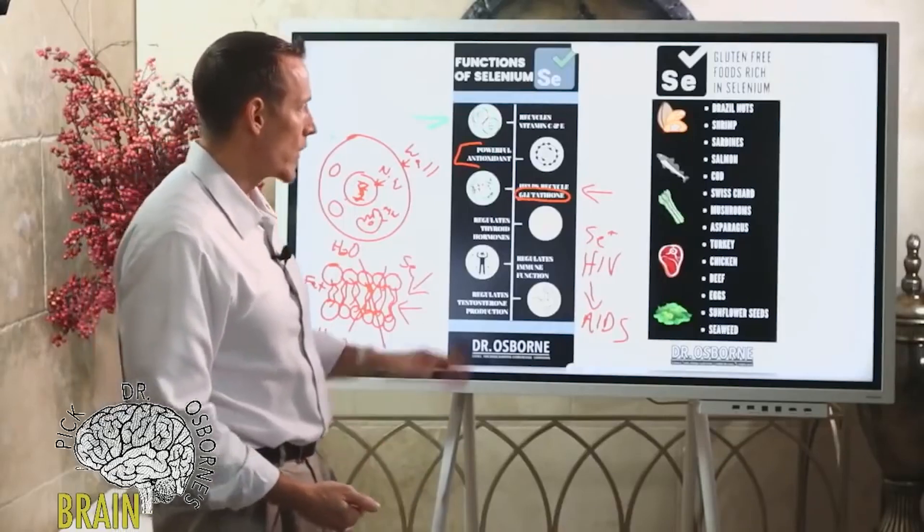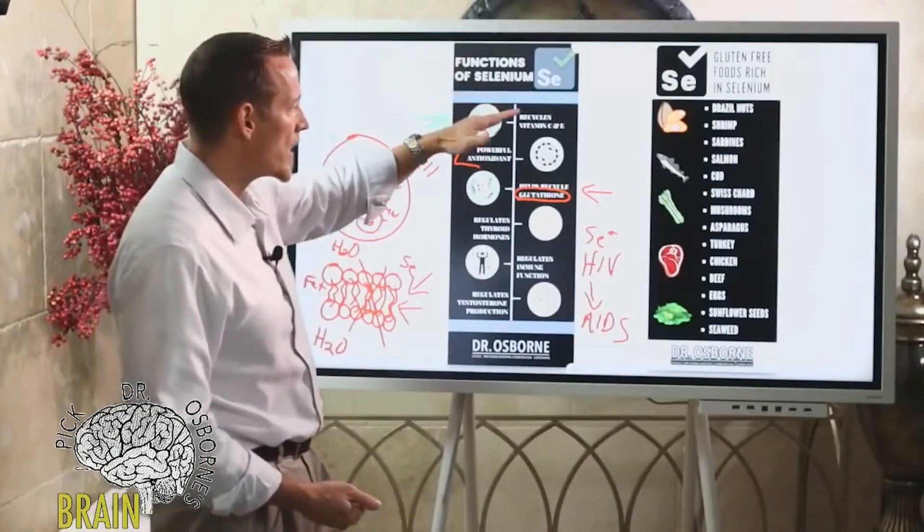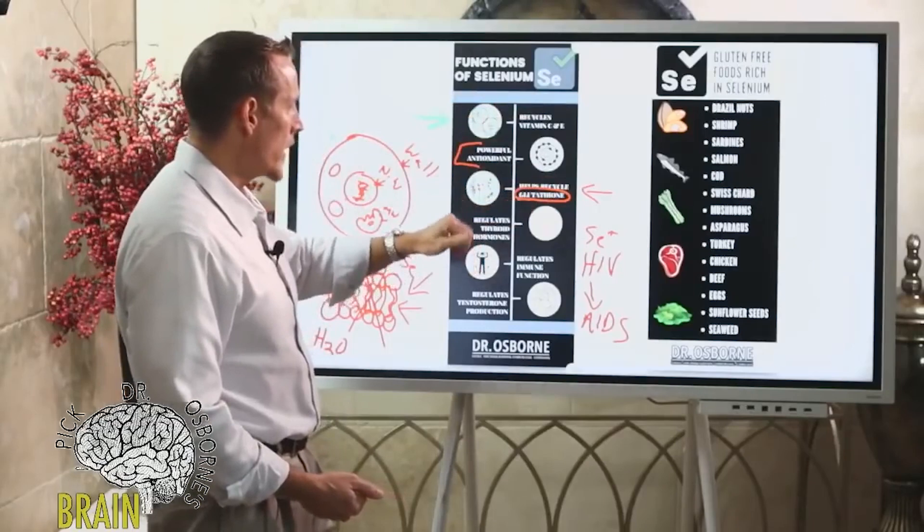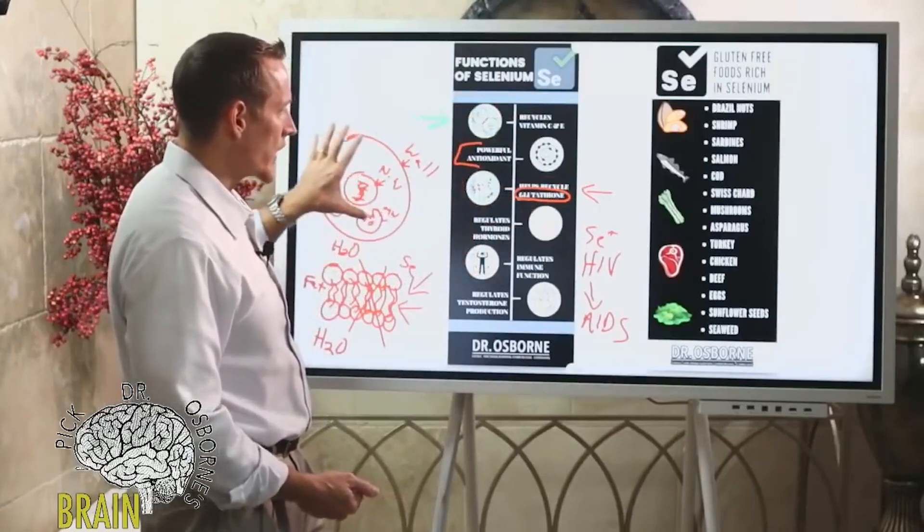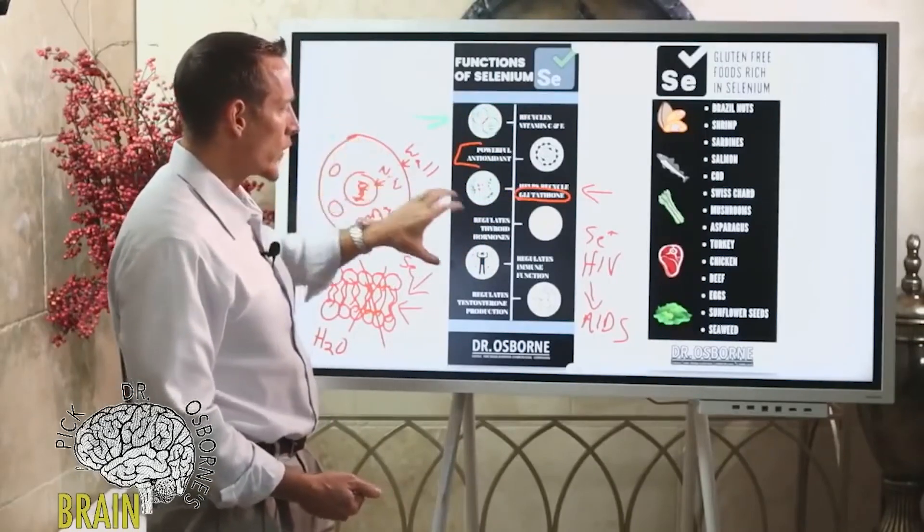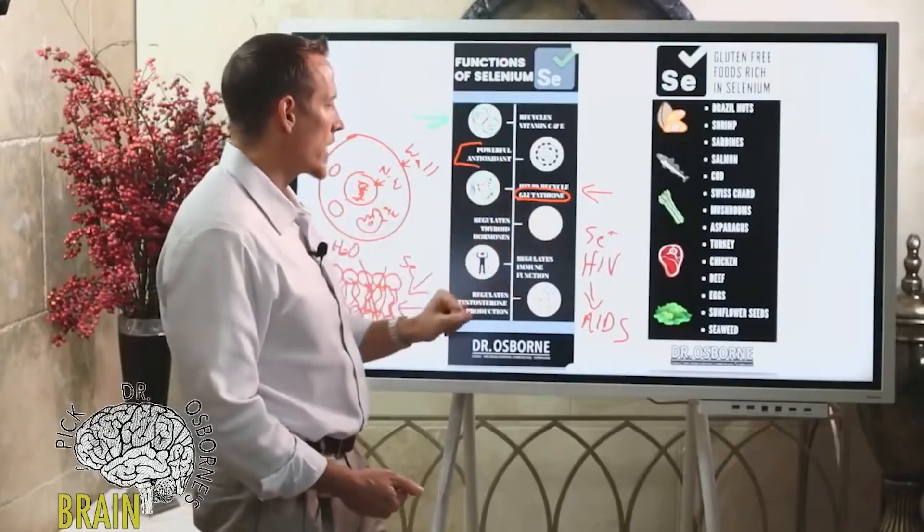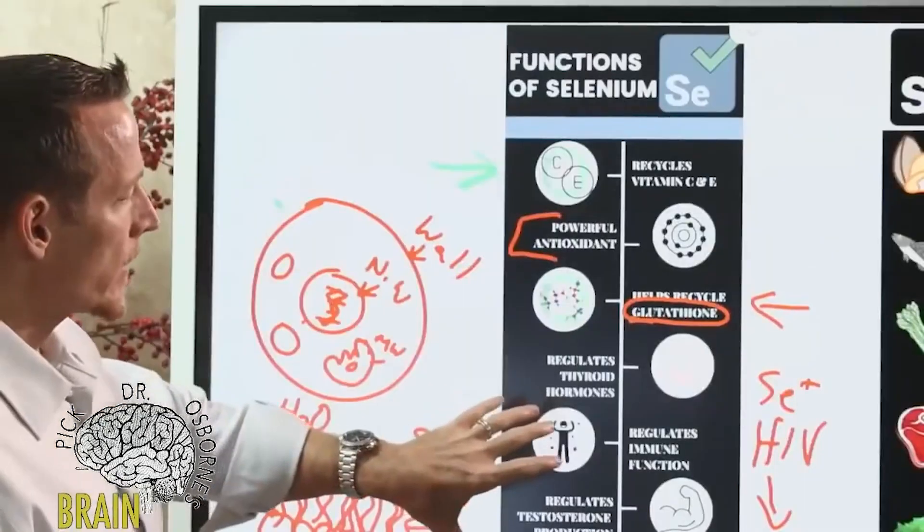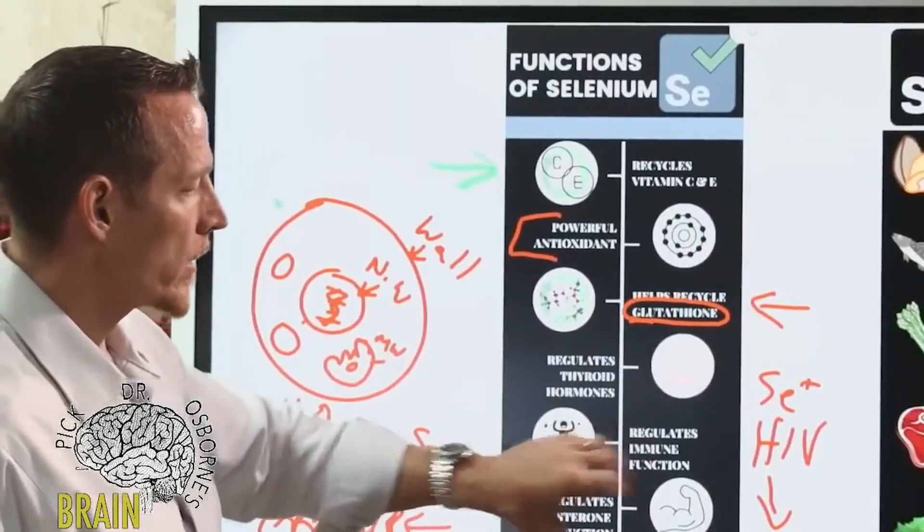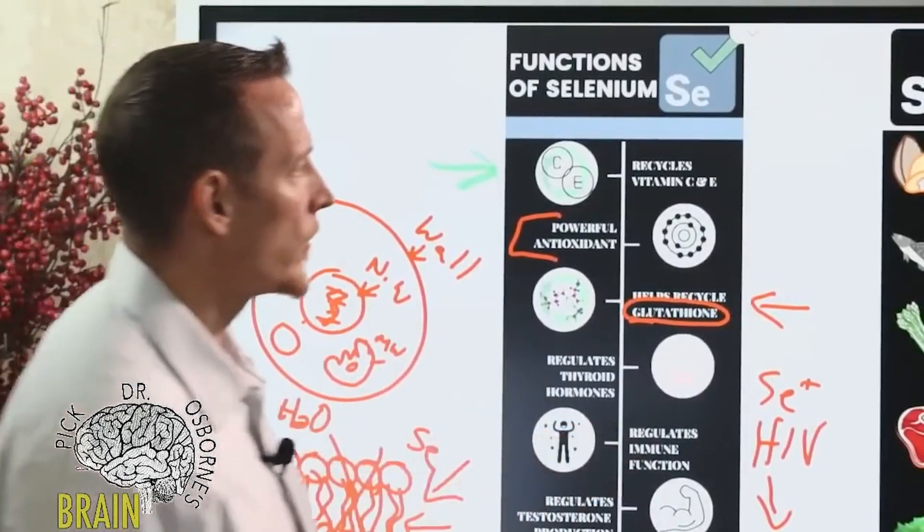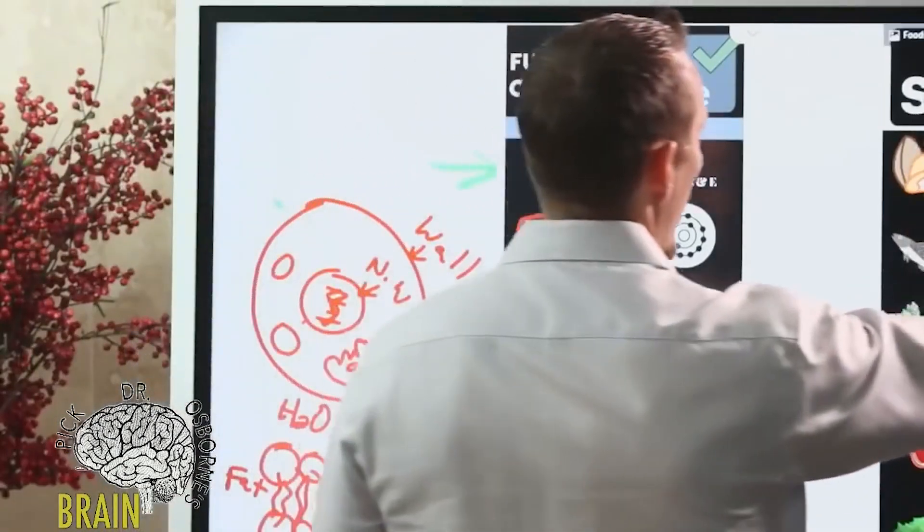So again, recycles vitamin C, E, and glutathione. It acts as a very potent antioxidant to protect the cell membrane walls. It regulates thyroid hormone - we're going to dive into that in a minute I promise. It regulates testosterone production and it regulates immune function. A lot of critical functions for selenium.